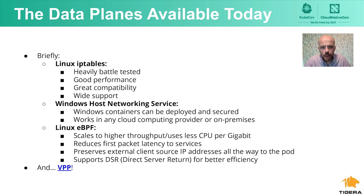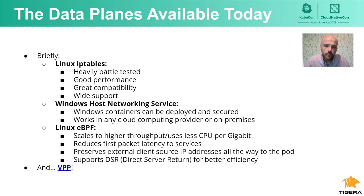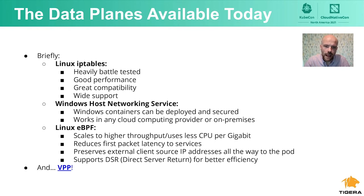Before talking about VPP, let's cover the three other data plane choices we have today. We have the Linux iptables data plane, our original data plane — heavily battle-tested, good performance, great compatibility, and wide support for a huge range of device types. The Windows host networking service data plane offers Windows container deployment and workload security in any cloud or on-prem. And finally, the Linux eBPF data plane, which scales to higher throughput, uses less CPU per gigabit, reduces first-packet latency to services, preserves external client source IP addresses all the way to the pod, and supports direct server return. You can find talks on all of these by searching for my name, Chris Tompkins, and eBPF.